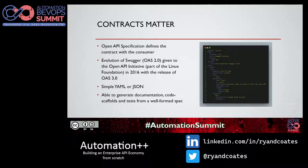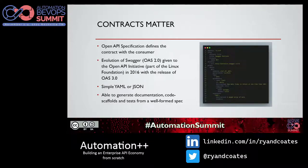OAS is an evolution of what some know as Swagger, which was OAS 2.0. SmartBear helped form the Open API Initiative back in 2016 as part of the Linux Foundation, with OAS 3.1 released earlier this year. The spec can be written in YAML or JSON — they're interchangeable. From a single well-formed file, you're able to generate documentation as code, code scaffolds for various libraries and frameworks, as well as tests, contract testing, and automatic functional testing. There's a lot of value from having that spec written.